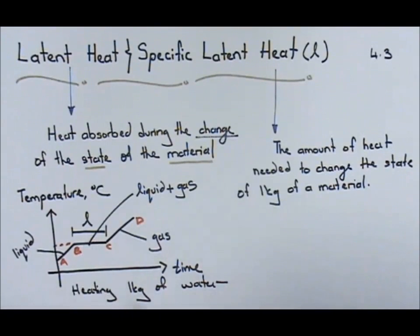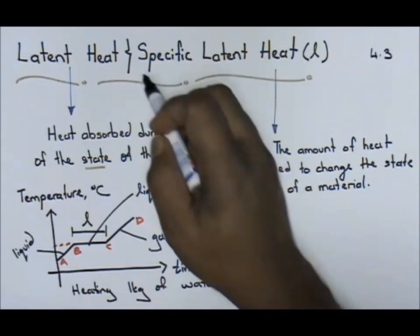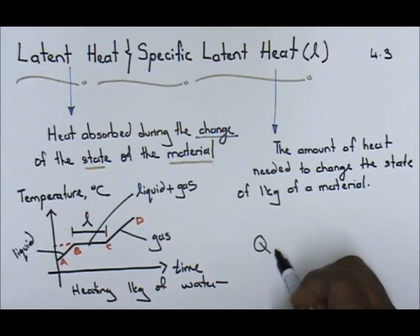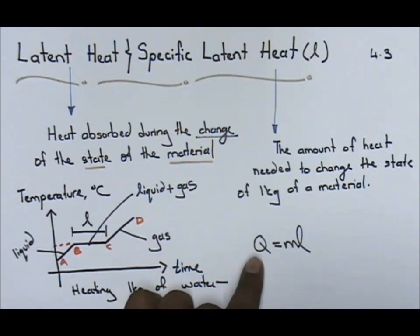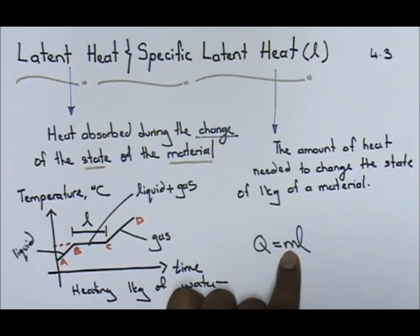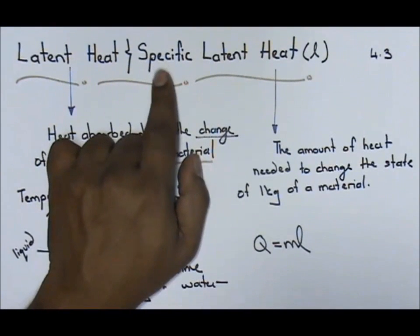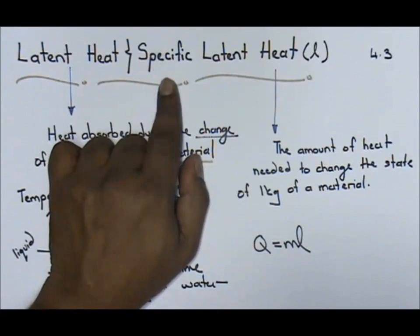The formula that you will use for specific latent heat is Q equals ML. Your Q refers to the heat absorbed or heat released. M refers to the mass in kilograms. Your L refers to the specific latent heat.